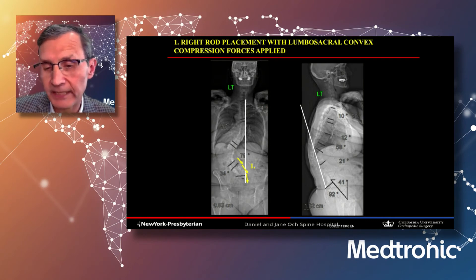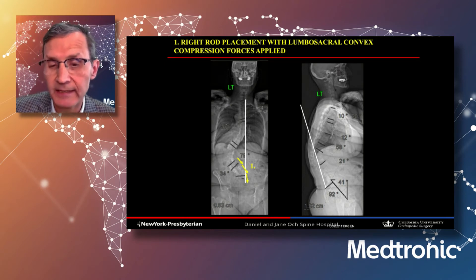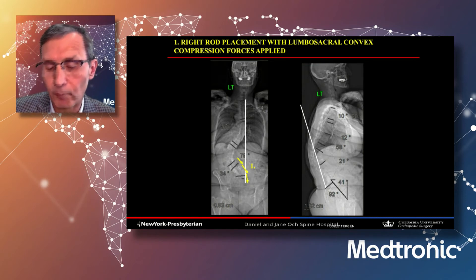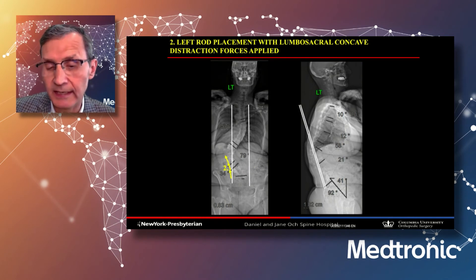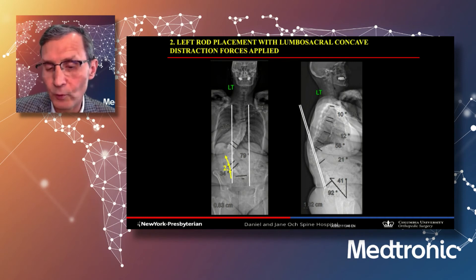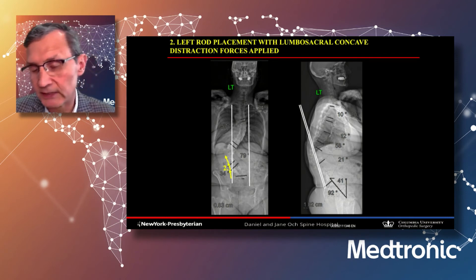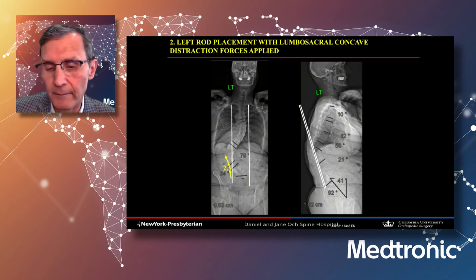Rod and force application begins with the right-sided rod attached distally into the S2AI screw, then capturing S1, L5, and L4, compressing those together to create lumbosacral lordosis and horizontalize L4 and L5. I then take the left-sided rod, engage it distally into the S2AI screw, S1, L5, and L4, and distract on that side. Since the right-sided rod is already locked, distraction does not remove lordosis — it further horizontalizes to get L3, L4, and L5 level on the sacrum. Always apply convex compression forces first before concave distraction forces, for sagittal plane realignment.